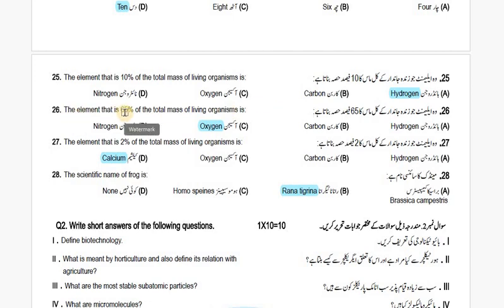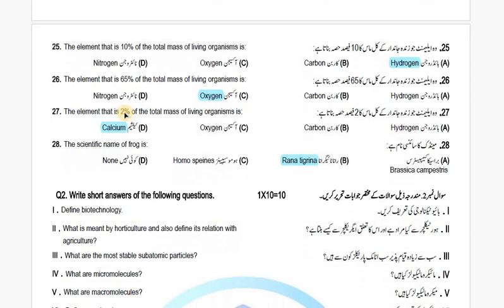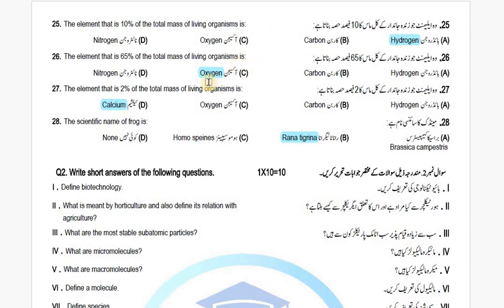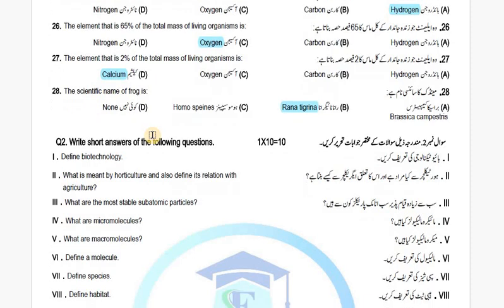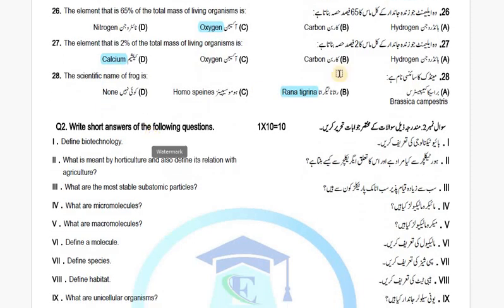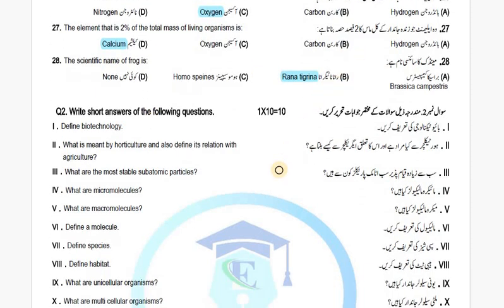The element that is 65% of the total mass of living organisms is Oxygen. The element that is 2% of the total mass of an organism is Calcium. The scientific name of the frog is Rana tigrina. These complete the MCQ portion.